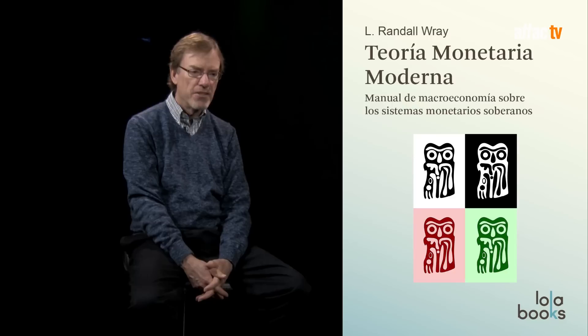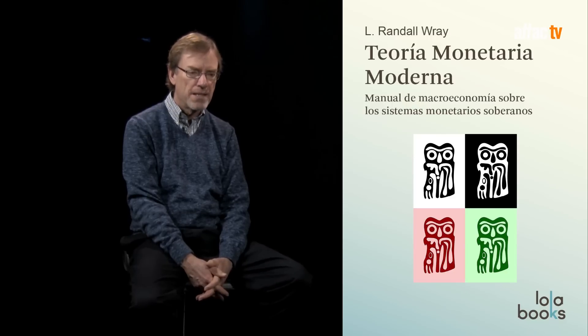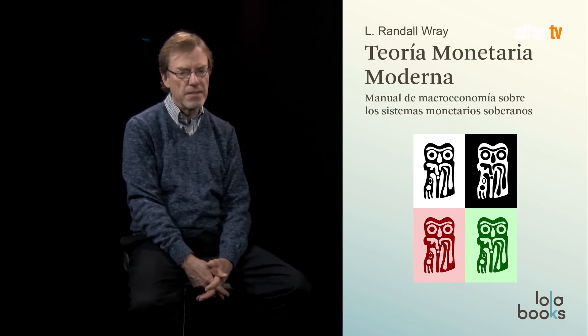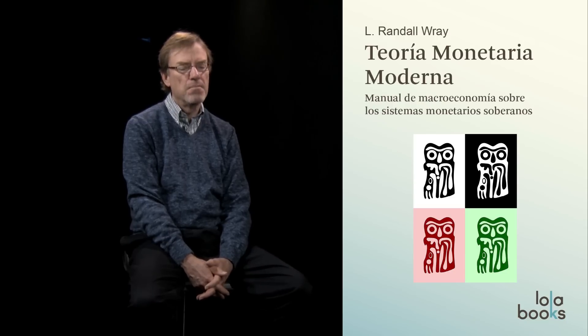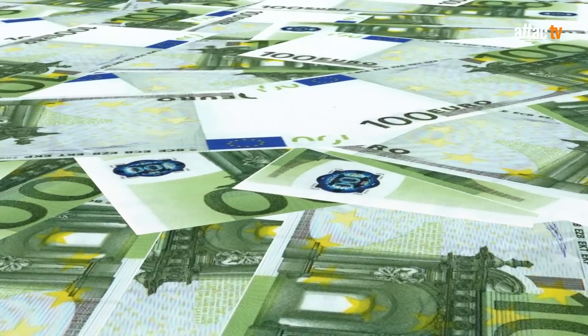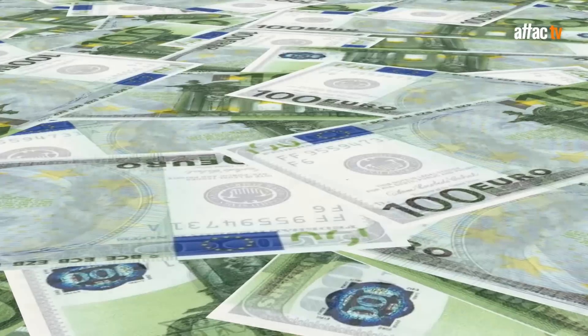At the most basic level, modern money theory is trying to explain how modern monetary systems operate. Almost without exception, monetary systems are state money systems, or sovereign currency systems, because governments choose a currency and issue that currency for the nation. There are a few exceptions, but this has been very common around the world and throughout history for the past 4,000 years or so. And so we're describing how these monetary systems work.